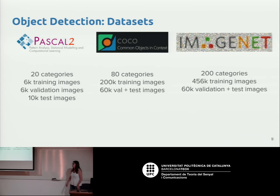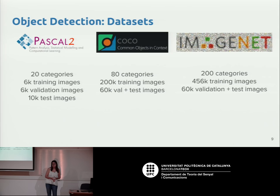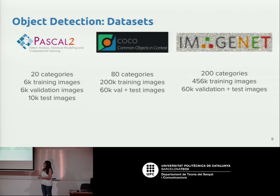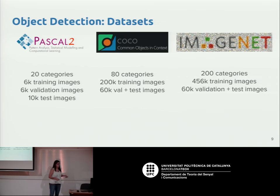As you already know, for deep learning you need labeled databases to train your algorithm. For object detection, some of the most popular datasets contain images with bounding box annotations around different objects. Pascal is very popular with 20 categories, and then there are COCO and ImageNet, which are much bigger.